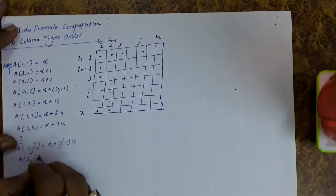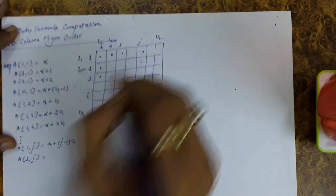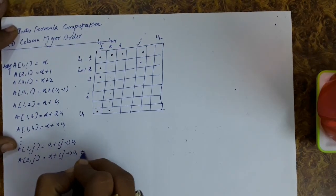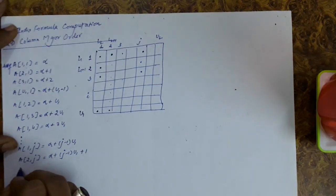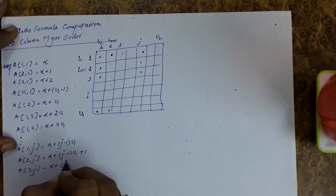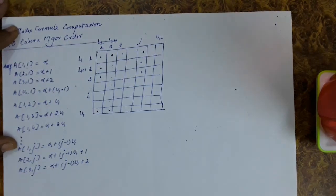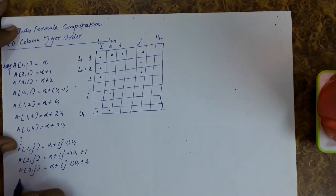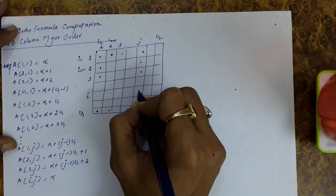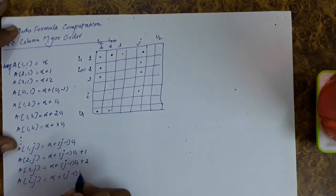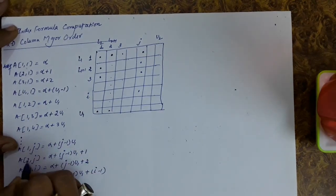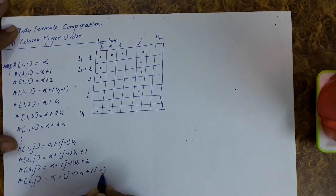The address of a2j is alpha + (j-1)*u1 + 1. The address of a3j is alpha + (j-1)*u1 + 2. In general, the address of aij is alpha + (j-1)*u1 + (i-1). If i is 3, the row offset is +2; if i is 2, it is +1; and if it is i, it is i-1.